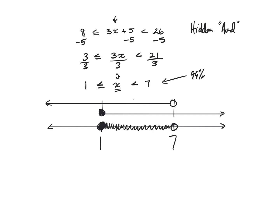So those are the values for which x makes the expression 3x plus 5 a number greater than 8 and less than 26. I hope that helps — take that with you. Thank you.